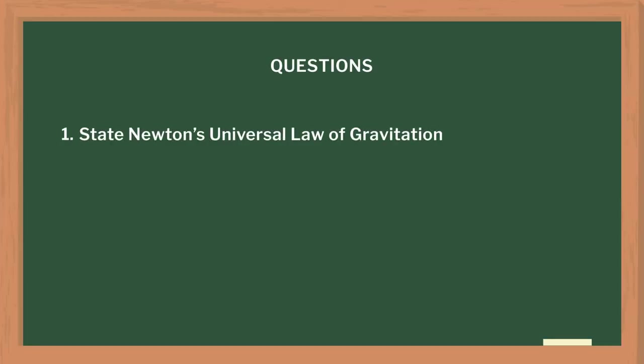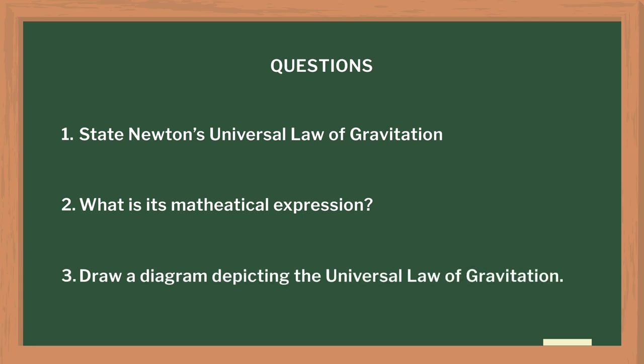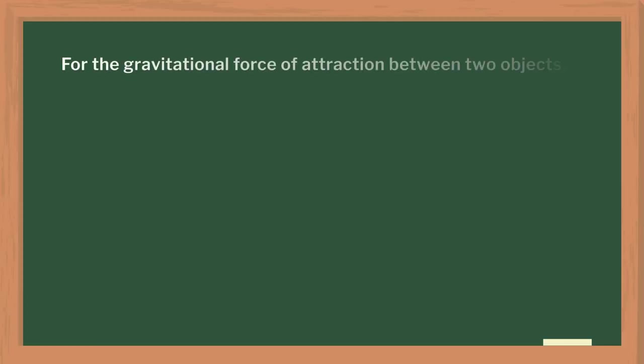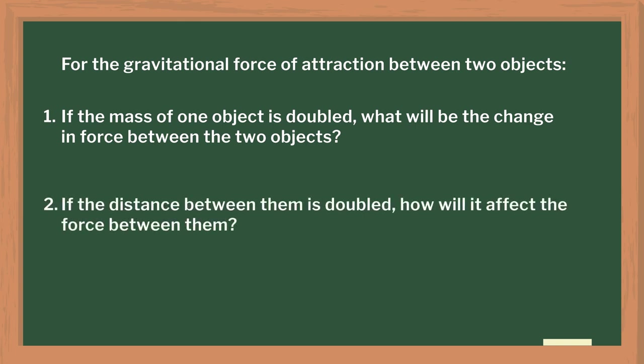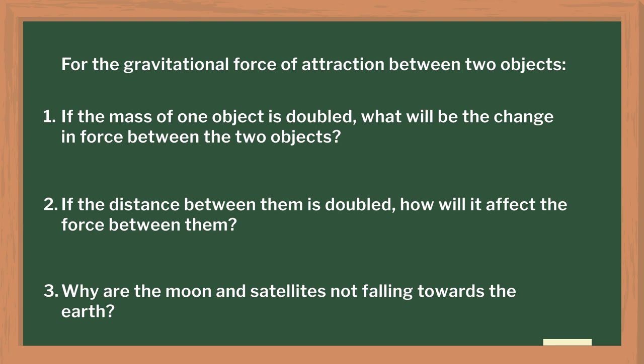I closed the session with some questions: What is the mathematical expression of Newton's law of gravitation? Draw a diagram depicting the universal law of gravitation. I also gave a few questions for homework: For the gravitational force of attraction between two objects, if the mass of one object is doubled, what will be the change in the force? If the distance between them is doubled, how will it affect the force? And why are the moon and satellites not falling on the earth? I then continued the session by showing a video to the class on how gravity is visualized. Both links are given in the description box.